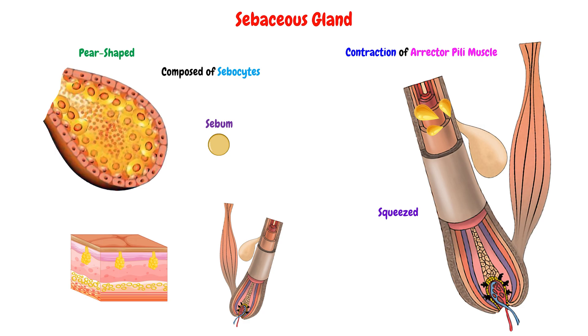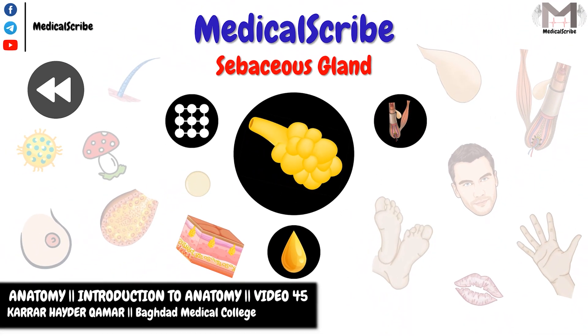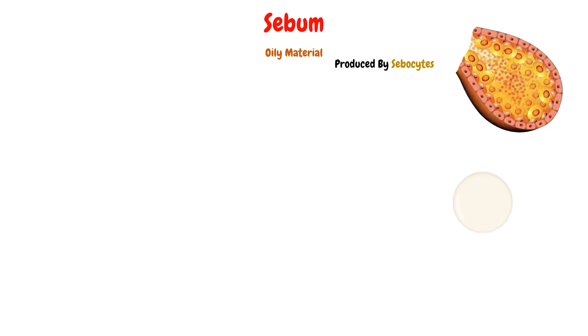There is another way to secrete the sebum that may be explained in later videos. Now, the sebum is the oily material produced by the sebocytes in the sebaceous gland. This sebum is a mixture of fatty materials, which are triglycerides, cholesterol, wax esters, and squalene.